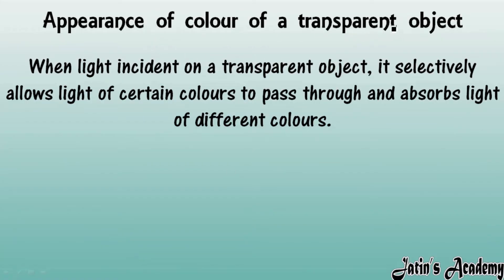The appearance of color of transparent objects: a transparent object is one which allows all light to pass through it and does not absorb any light. However, a transparent object will allow only selected colors to pass through it and does not allow some colors to pass — meaning it will absorb those colors.